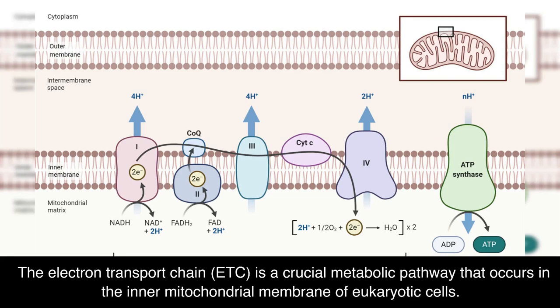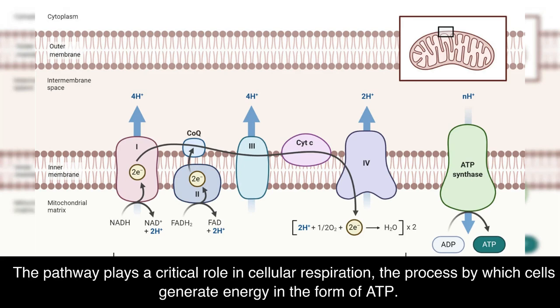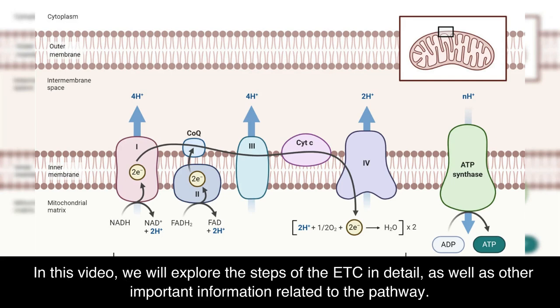The electron transport chain, or ETC, is a crucial metabolic pathway that occurs in the inner mitochondrial membrane of eukaryotic cells. The pathway plays a critical role in cellular respiration, the process by which cells generate energy in the form of ATP. In this video, we will explore the steps of the ETC in detail, as well as other important information related to the pathway.